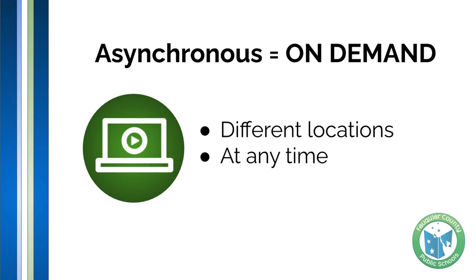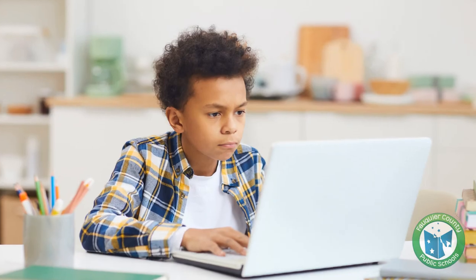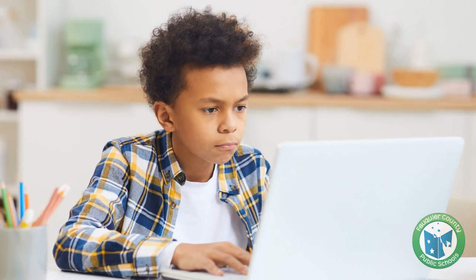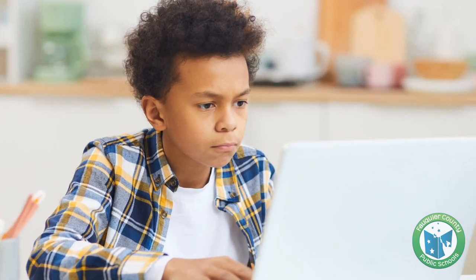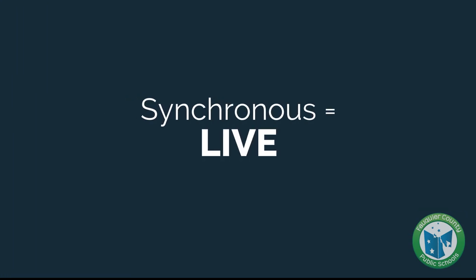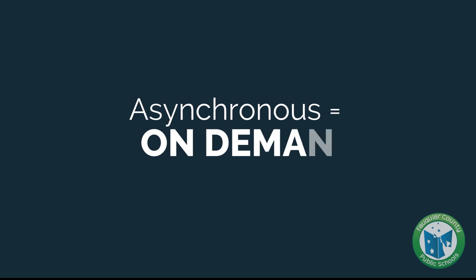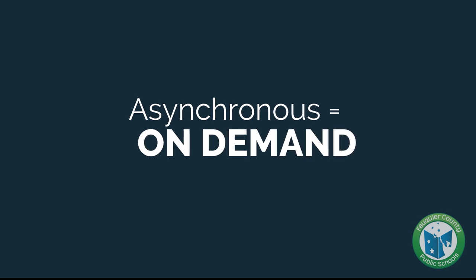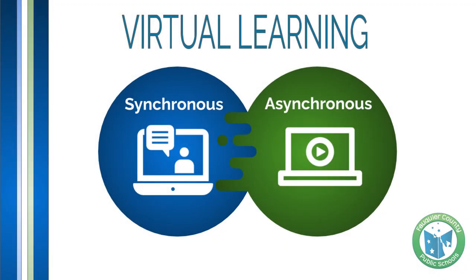Asynchronous occurs at different times and when the student and teacher are in different places. In an asynchronous learning environment, students can access content, resources, and activities at any time and from anywhere. Put simply, synchronous learning is live learning, and asynchronous learning is on-demand learning. Let's break it down further by identifying some examples and benefits of each.